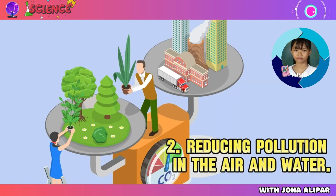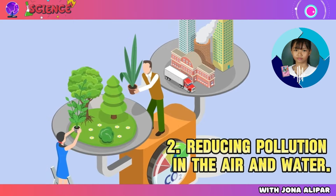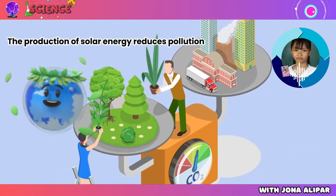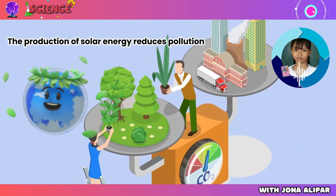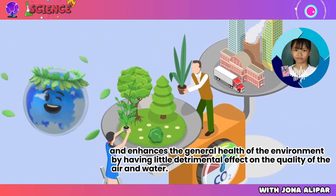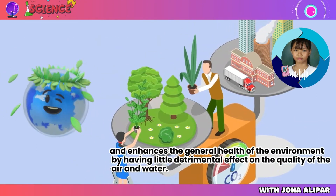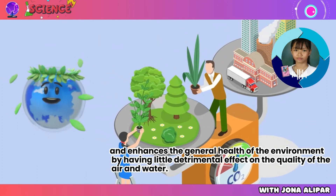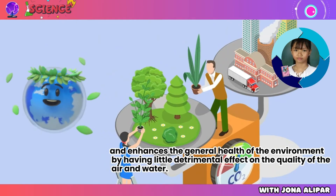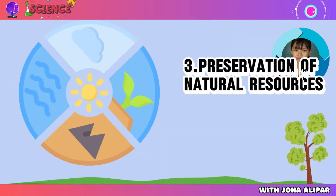Number two: reducing pollution in the air and water. The production of solar energy reduces pollution and enhances the general health of the environment by having little detrimental effect on the quality of the air and water.